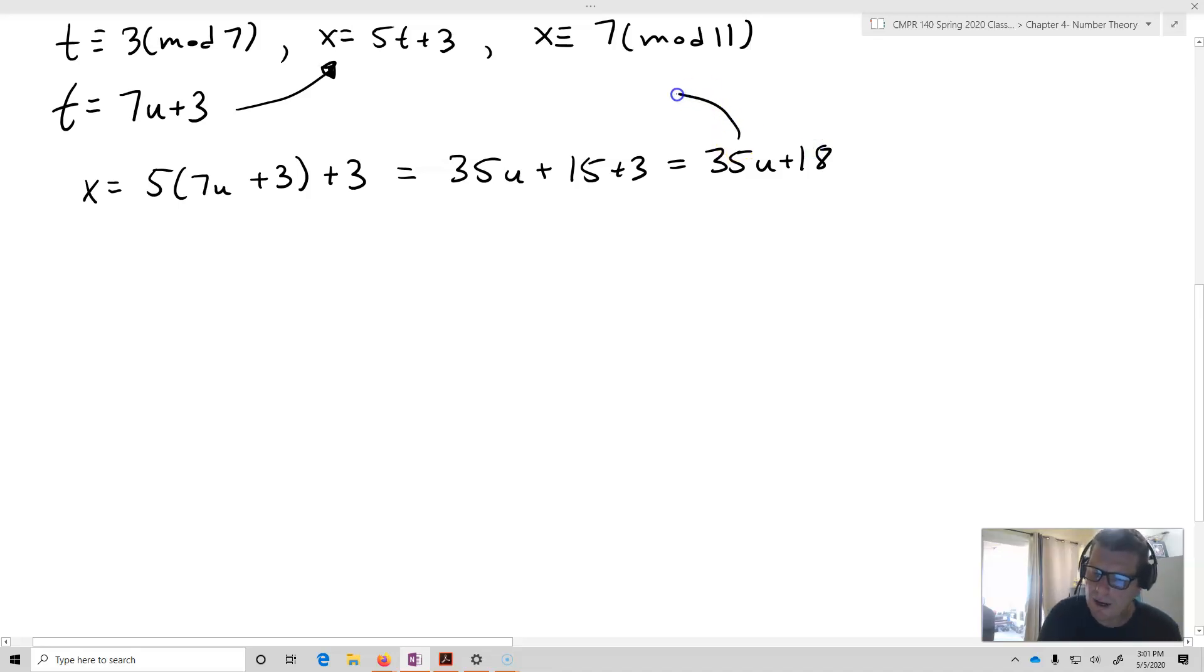So now I'm going to substitute this in for the x in my next congruence. So 35u plus 18 is going to be equivalent to 7 mod 11. Now, just like in the last occurrence, what we're going to do is now solve this linear congruence. So we'll subtract 18 from both sides. And what I get is 35u is congruent to negative 11 mod 11.